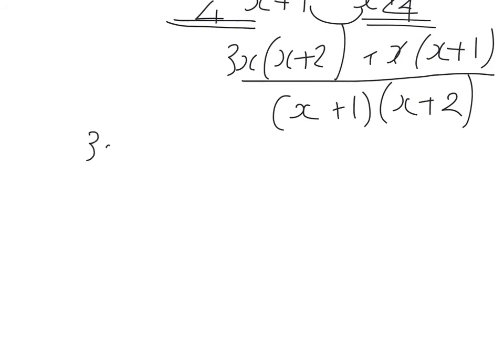So on the top that'll be 3x squared plus 6x plus x squared plus x. So I'm kind of going to the side with this one. Tidy that up and that'll be 4x squared, rather 3x squared plus x squared is 4x squared plus 6x plus x is 7x.